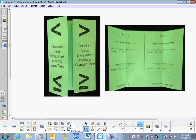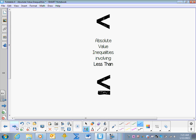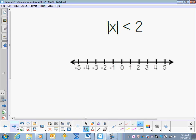Solving absolute value inequalities involving less than and greater than. We'll first start with less than. The absolute value of x is less than 2.